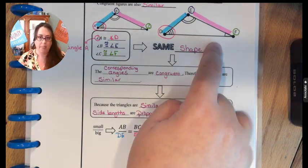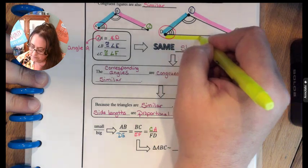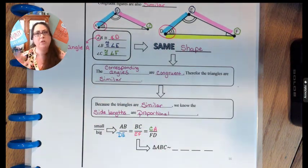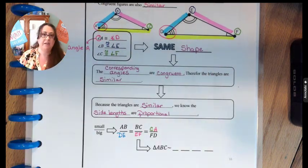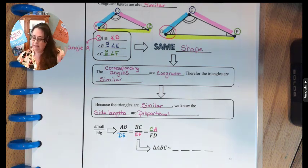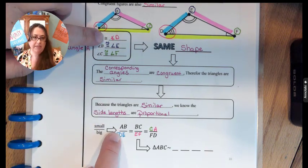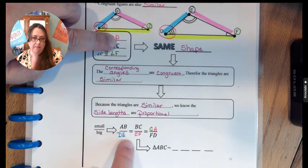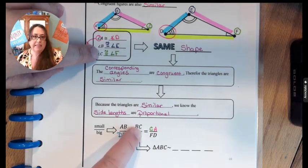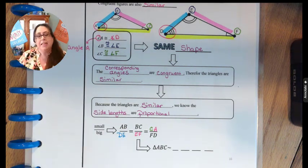Let's verify: side FD — are the endpoints of the corresponding side C and A? They are. So another way to find corresponding sides is by matching them up directly: A went to D, B went to E, C went to F. If you have side BC, underneath B you put E and underneath C you put F — that's a very straightforward way to find those corresponding parts.